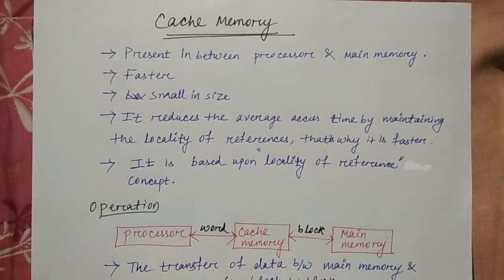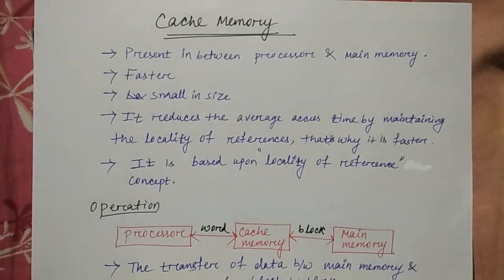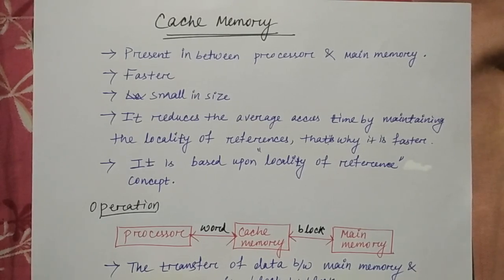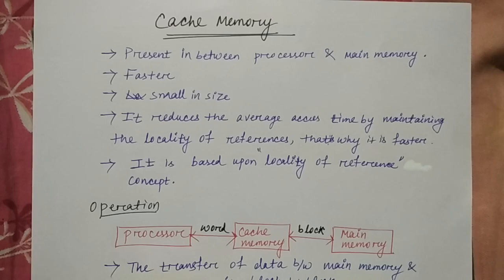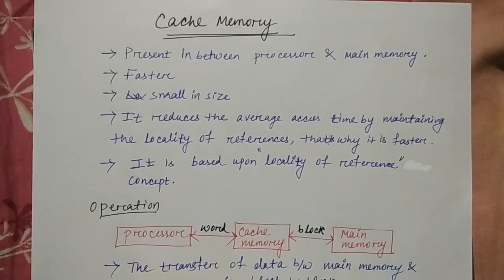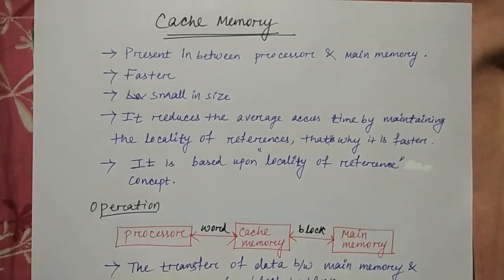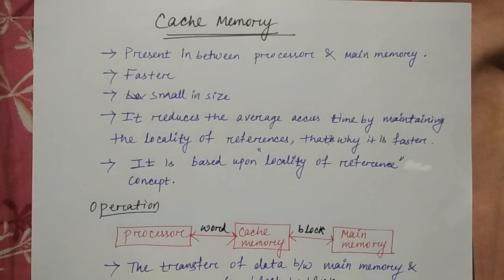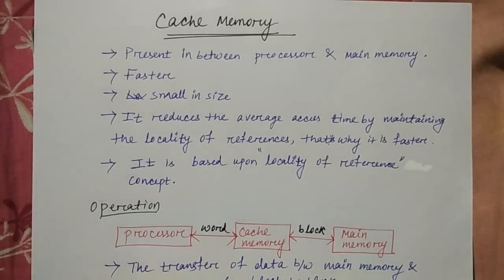What is cache memory? I have told that in memory hierarchy, cache memory is faster than primary memory. Secondary memory is hard disk, pen drive. Primary memory is RAM and ROM, as I have explained in the previous video.